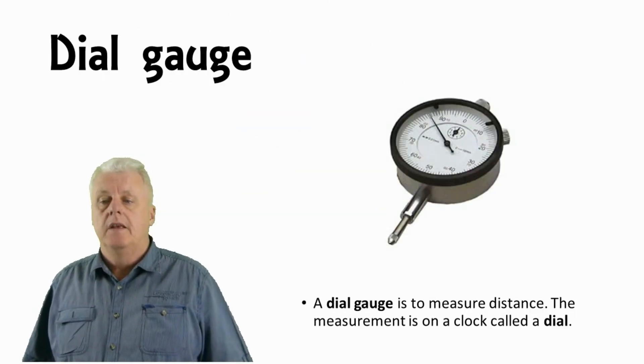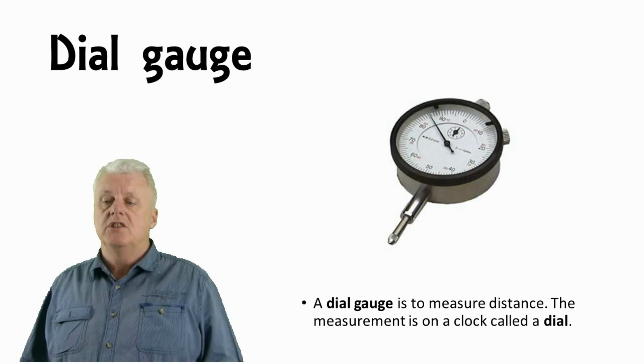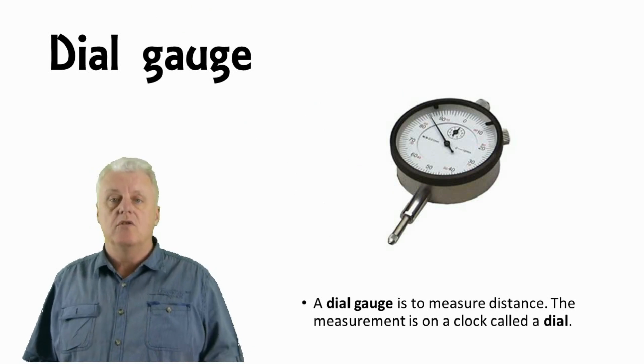Dial gauge. A dial gauge is to measure distance. The measurement is on a clock called a dial.